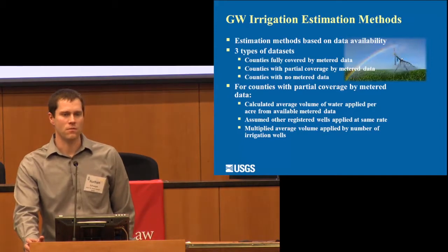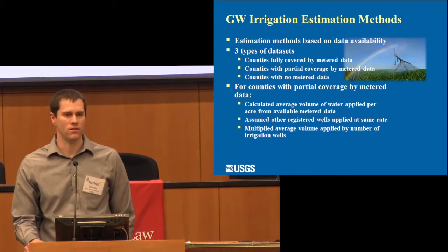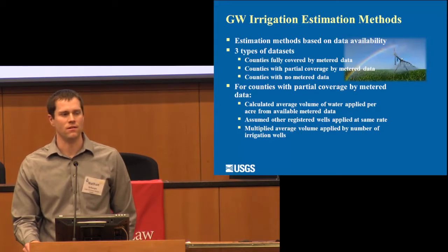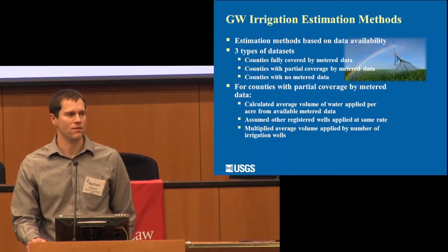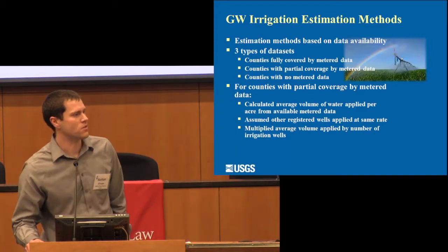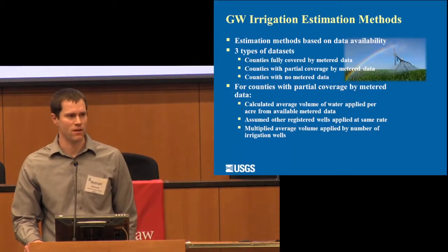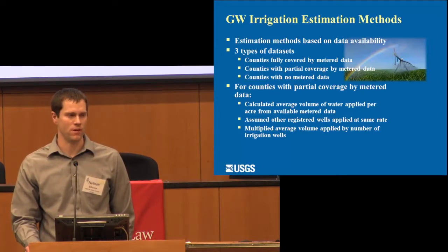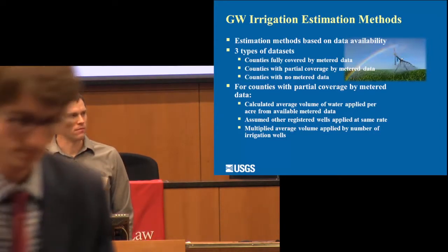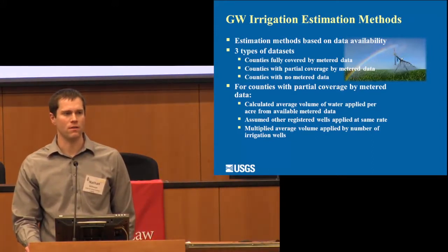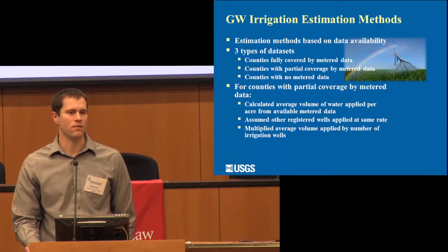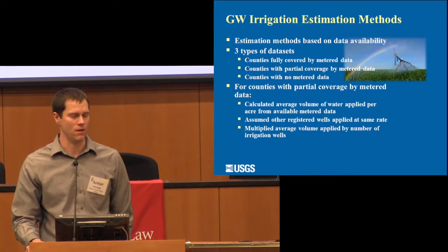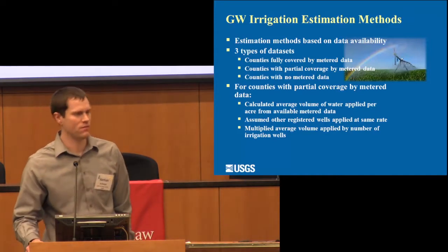The Nebraska Water Science Center handles the irrigation side of the estimates. The amount of data available increases the success of these estimates. Some NRDs have metered data, so for the counties they cover we have really good data. Other counties are only partially within an NRD, giving us partial coverage. Some NRDs have voluntary metering we were able to use as well, and there are also some counties with no metered data at all.